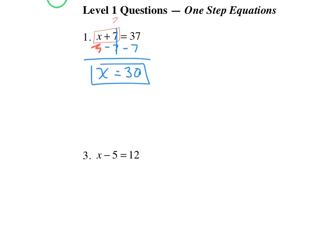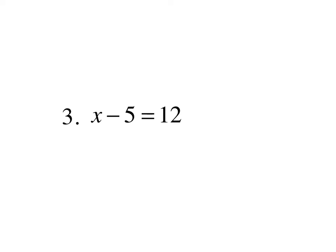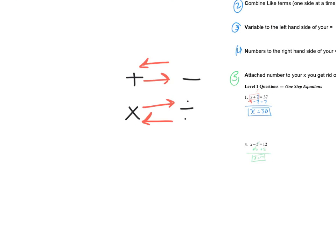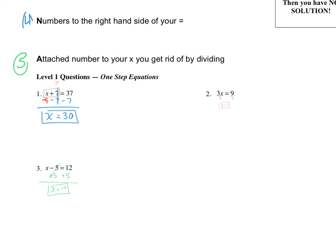Now let's go on to our next example. I have to ask myself, how do I get rid of a minus 5? Well, to get rid of a minus 5, you simply add 5. Add 5 to both sides, and I get x equals 17, because 12 plus 5 is 17. Those are our one-step equations.